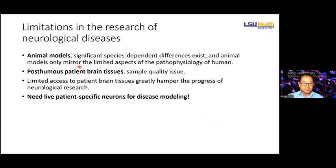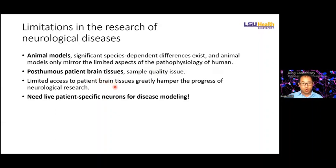The most widely used models are rodent models. That's an excellent model to find mechanisms, but there are some limitations because species-dependent differences exist. Animal models only measure a limited aspect of the pathophysiology of human disease. Some patients donate tissues — that's a very valuable sample, but sample quality also limits our research. We cannot use this kind of sample to do biochemical work to identify dysregulated genes, proteins, or pathways. So in neurological disease research, we really urgently need live patient-specific neurons for disease modeling, drug screening, and to decipher the pathogenic mechanism.